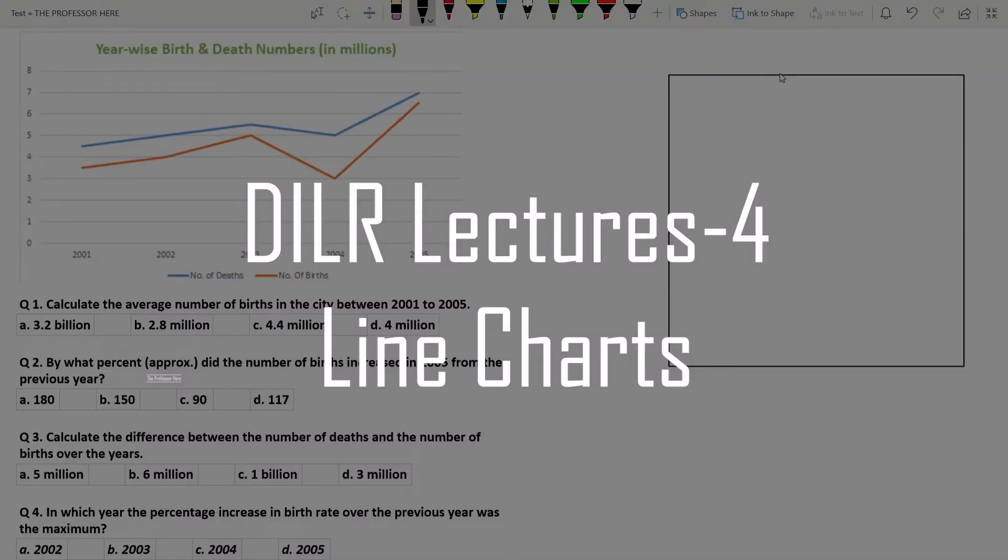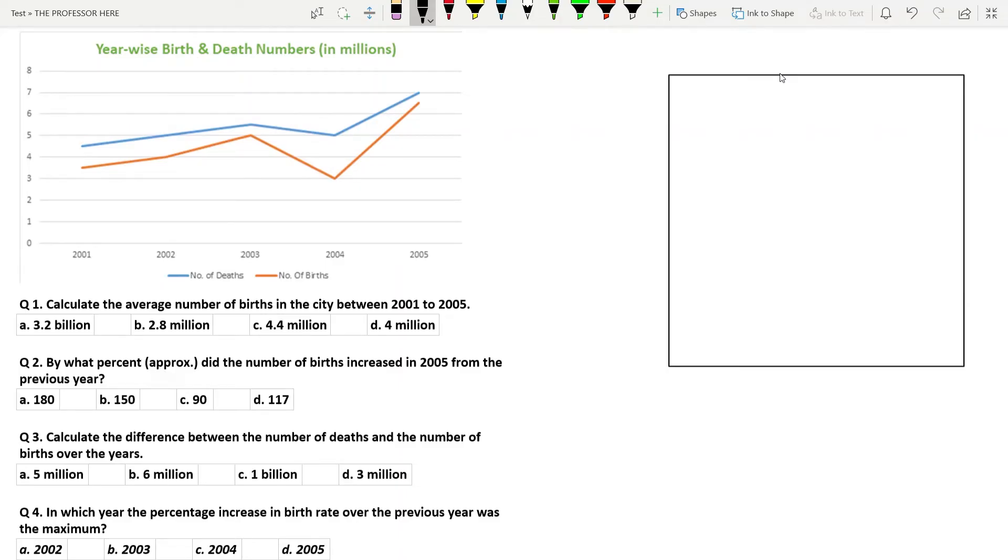In this video of data interpretation and logical reasoning, we are going to solve a question based on line graph. In the previous videos of DILR, we have seen that we have to convert the graph into a table to solve it quickly. We follow the same here in this question too. We will convert the line chart into a table and try to solve it. By converting the graph into a table, we are actually making it much easier for understanding and interpreting the data values in the question. If the question is simple, you can proceed even without the table. You can just mark it in the graph itself or if you have any other easier methods with you, then you should follow that. So now let's look how to solve this set.